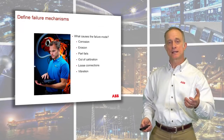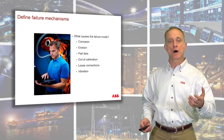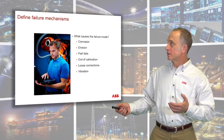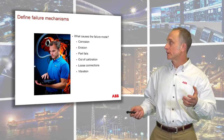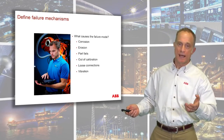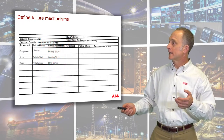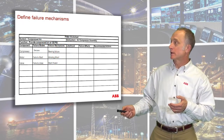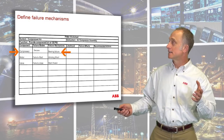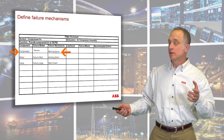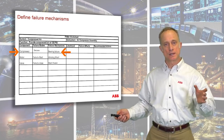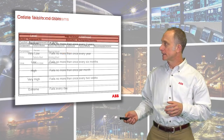Next we look at failure mechanisms — what would cause these things to fail. Examples include corrosion or erosion, part failure, or miscalibration. For a compressor, the failure mode is that it seizes, and what would cause that might be a bearing failure. We go through all systems like that and fill out the sheet.